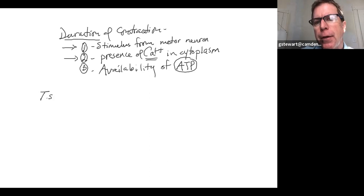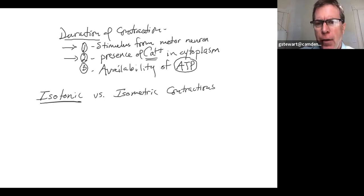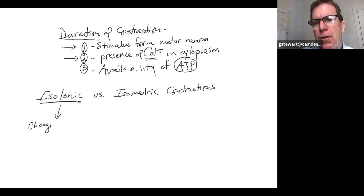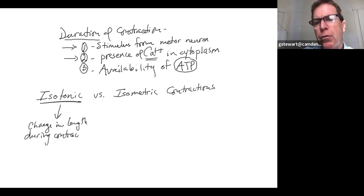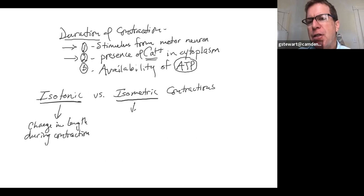I want to go over two different types of contraction: isotonic versus isometric contractions. Isotonic - think that the muscle either shortens or lengthens during contraction, so the muscle changes its length during contraction. Also during contraction, tension is produced - the force that a muscle can act on a load. Isometric contractions still produce tension and force created, just like in an isotonic contraction, but there is no change in muscle length or size.